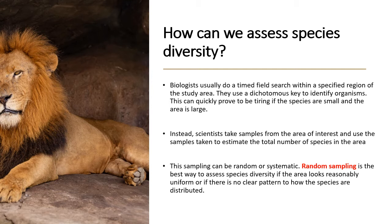If, for example, you have a large field, you would then take samples from a specific section of the field, which might be sectioned off and measured in meters or square meters, depending on what you're doing. And then you can use that as an estimate if you know the full size of the field. This is what we call sampling — we just take samples from a specified section of the area we're trying to measure, and we use those samples to estimate what might be happening all over the area. Sampling can be random or it can be systematic. Random sampling is usually used to assess species diversity, especially if the area looks uniform or if there is no clear pattern to how the species might be distributed within the area.